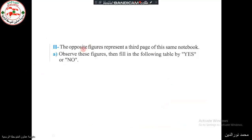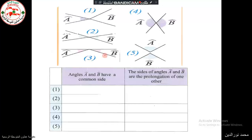On the third page, we put yes or no. In figure one, do angles A and B have a common vertex? Yes, they have a common vertex. Are the sides of angles A and B prolongations of one another? If we prolong this side we should get the other side, which is not the case — so no.